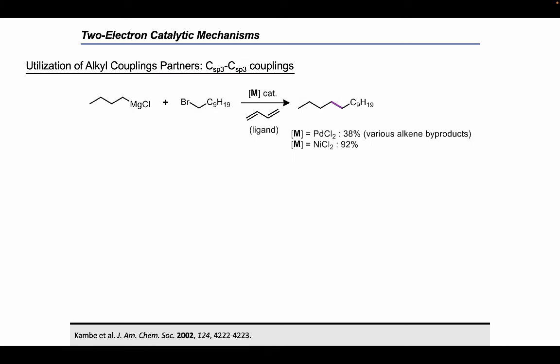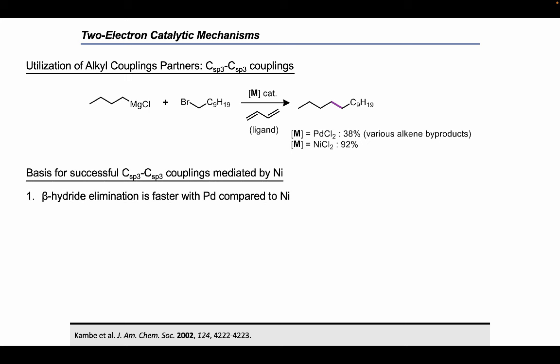In the Kumada coupling of n-butyl magnesium chloride and 1-bromodecane, use of palladium chloride as the catalyst only afforded 38% of the desired product, with a wide range of byproducts stemming from undesired beta-hydride elimination. However, the same reaction under nickel catalysis gave a near-quantitative yield of the desired product. So what are the key differences that enable nickel to facilitate this sp3-sp3 coupling? Beta-hydride elimination is innately slower with organonickel species compared to palladium.